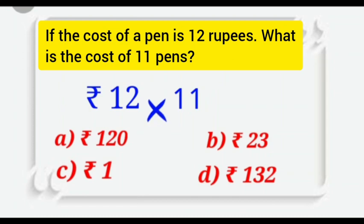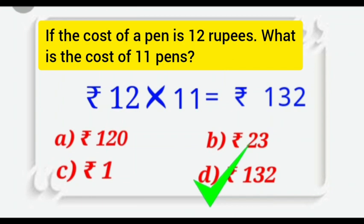Yes. When we will multiply 12 and 11, our answer will be equal to rupees 132. Yes. Option D, rupees 132 is the correct option. And we will put a tick here.